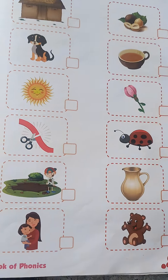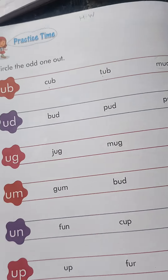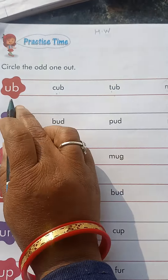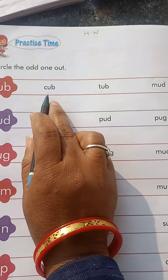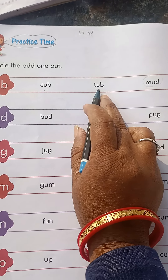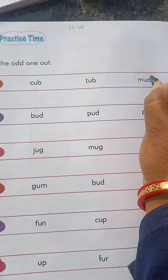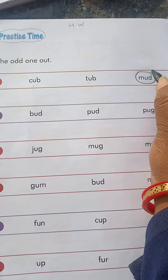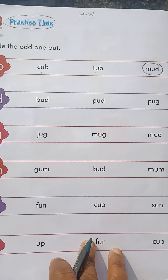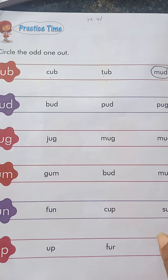Now come to the next page. Here we circle the odd one out. The words are: C-UP, cup; T-UB, tub; but M-AD, mud is the odd one — circle it.